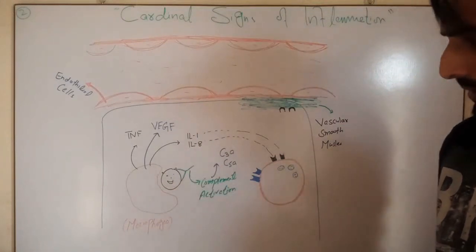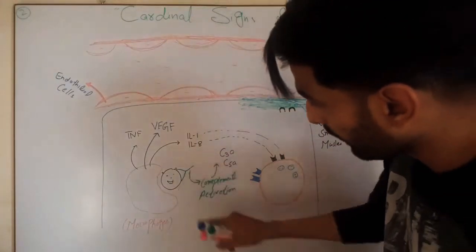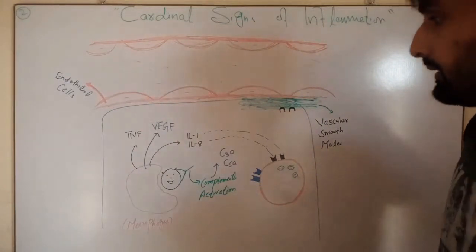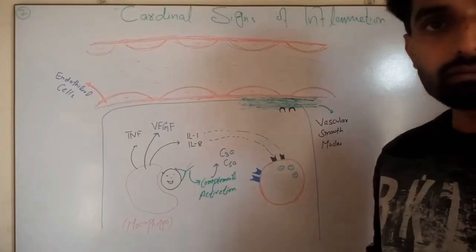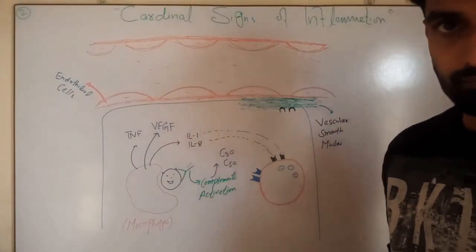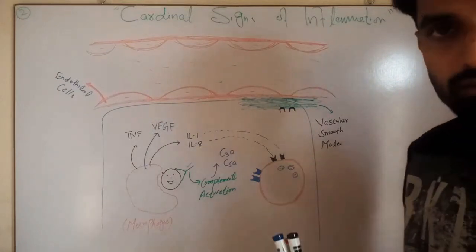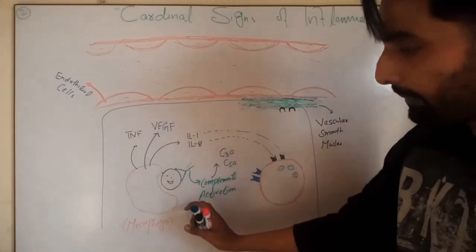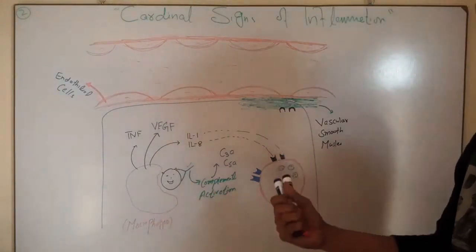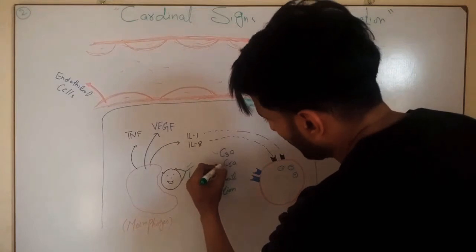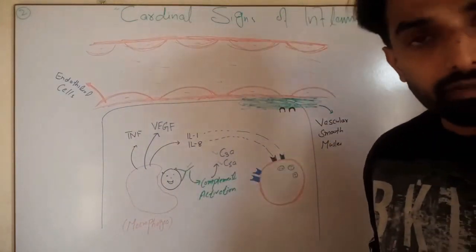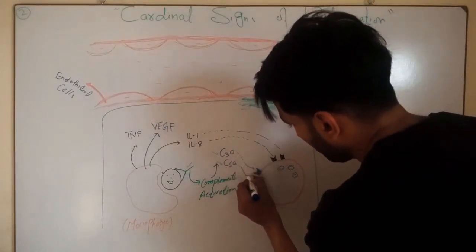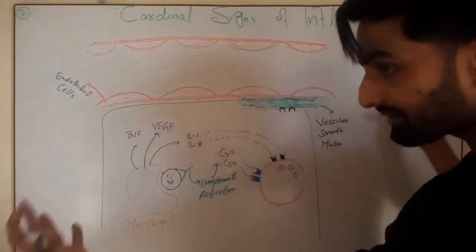Additionally, when the pathogen enters the tissue and antibodies have been produced, these antibodies attack the pathogen. The Fc portion of the antibody can activate the complement system. The two major complement proteins — C3a and C5a — also have receptors on the mast cell and will act on those receptors.